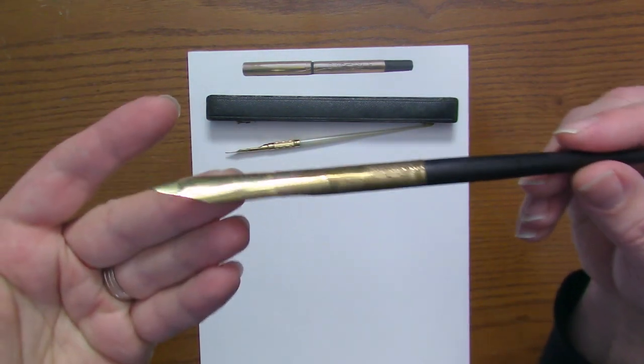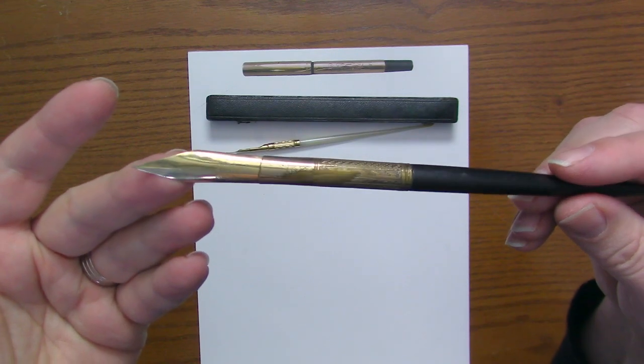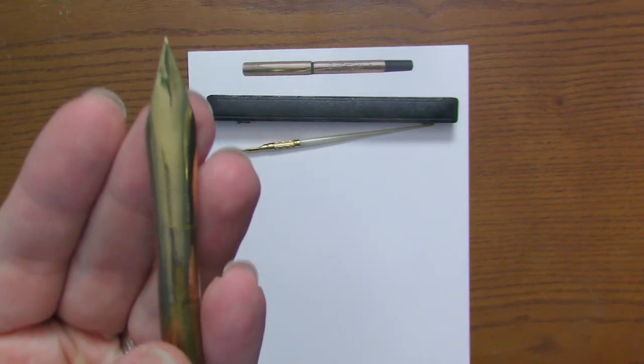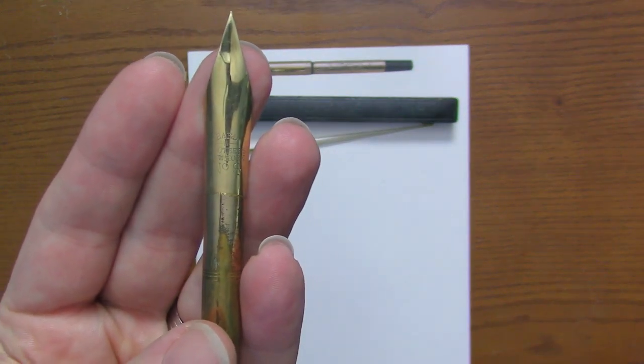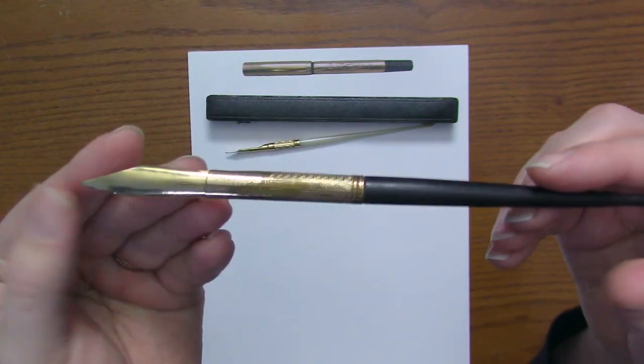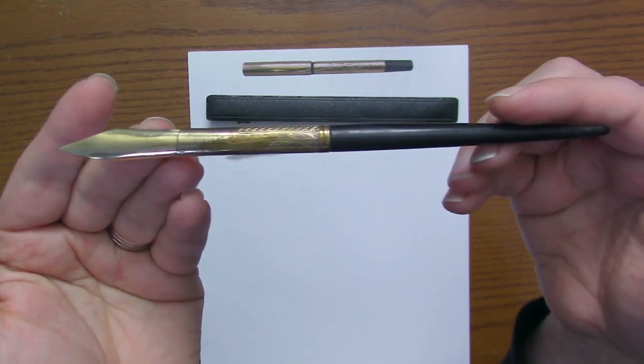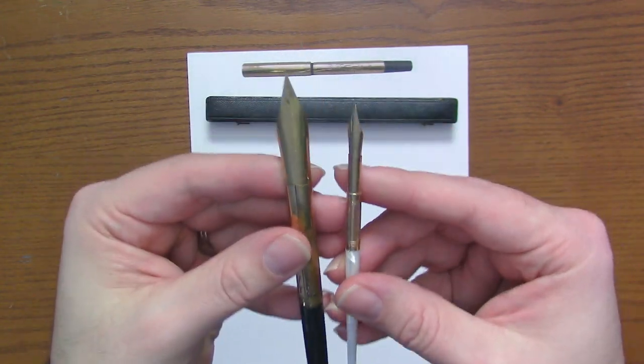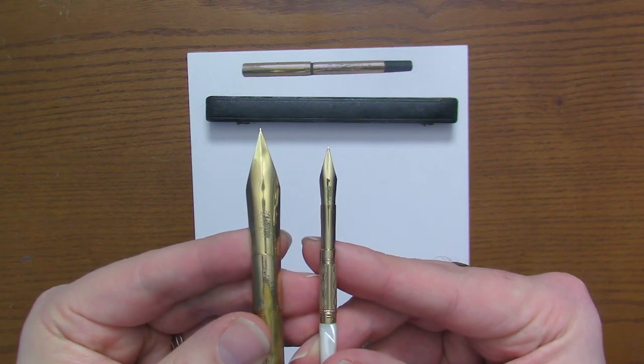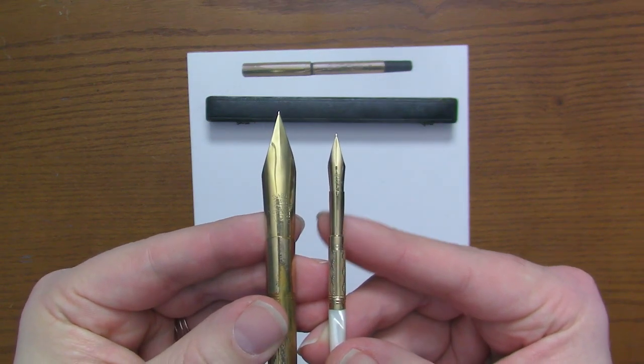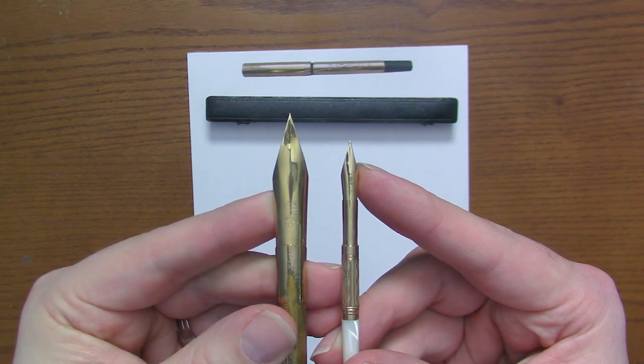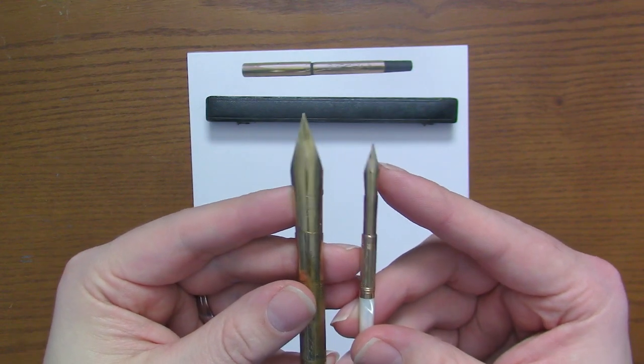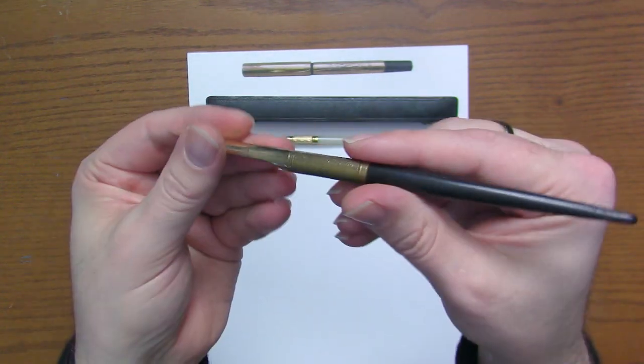So here it is. This is the largest size that I'm aware of. A number eight size Bard & Brothers nib. And it's huge. And it comes with what looks like an original holder. And holders for these larger pens are somewhat uncommon because as you can see the difference here, more dip pen nibs were toward the smaller size than the larger size during the day. So number two, maybe number three size dip pen nibs were common. This number eight size is just huge.